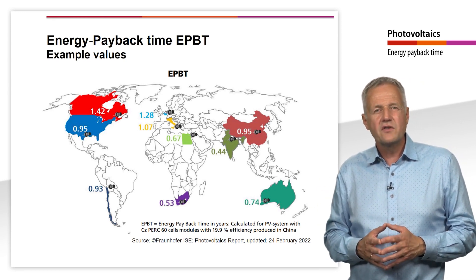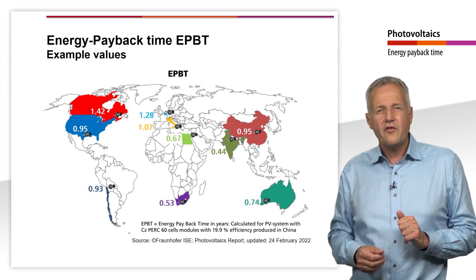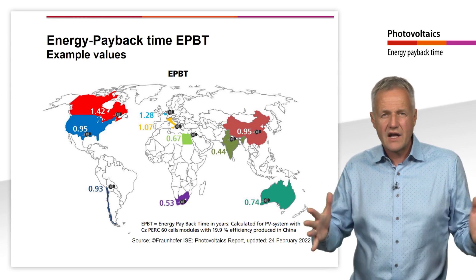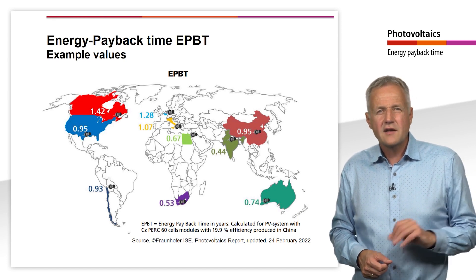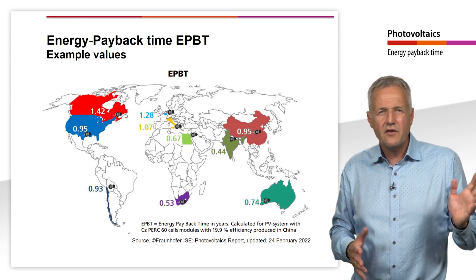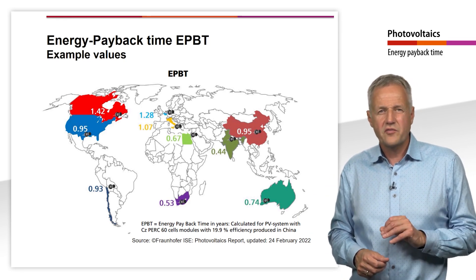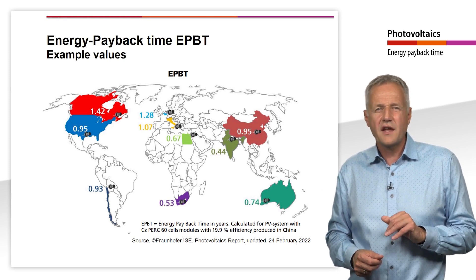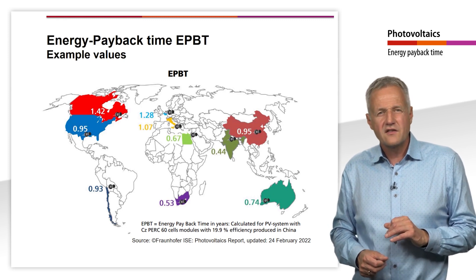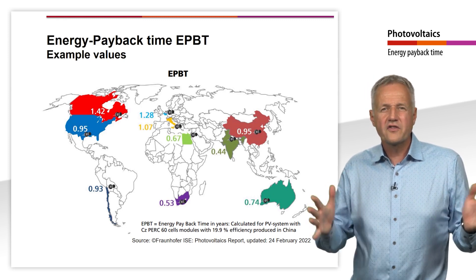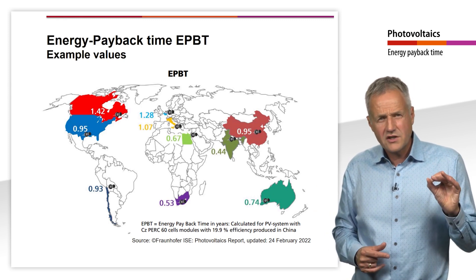The low energy payback time shows that the primary energy used in the production, use and end-of-life of the PV system is quickly recovered after commissioning. Even at lower plant lifetimes, it is therefore unlikely that PV plants will not pay for themselves from an energy perspective. Older studies show much higher energy payback times. This is because earlier solar cells were much thicker, solar losses were much higher, processes were much more inefficient, and module efficiencies were much lower.